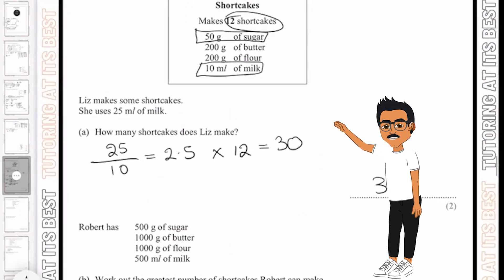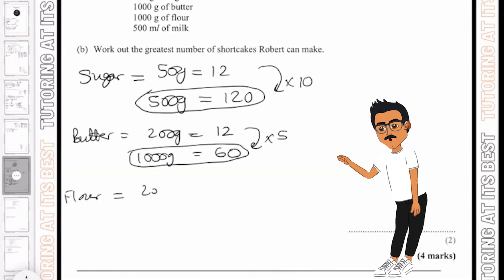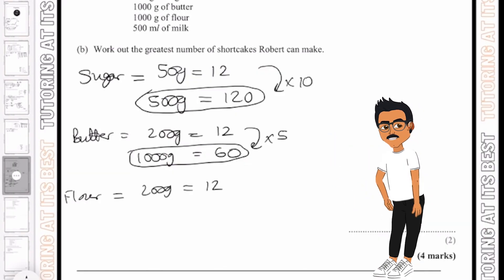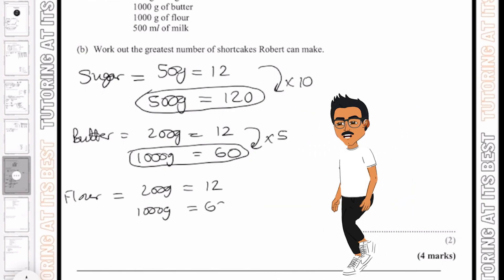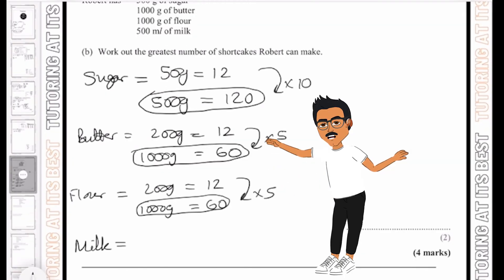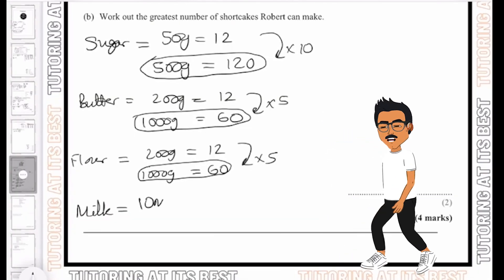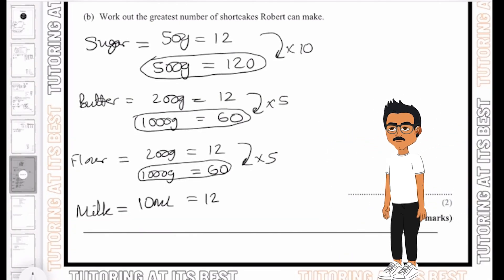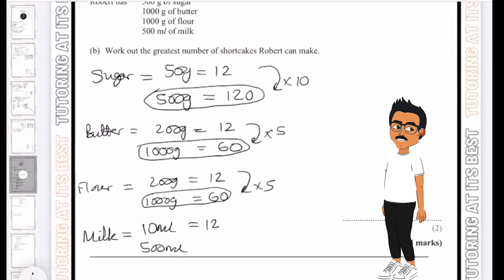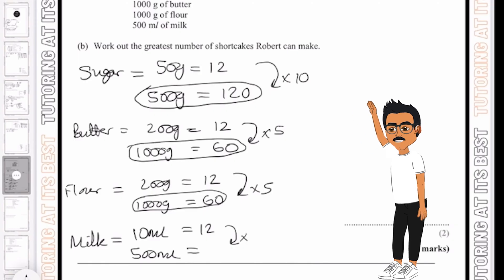And then over to our flour. Again, with our flour here, we have 200 grams of flour. So again, if we have 200 grams, which makes us 12 shortcakes, we need 1000, so we'll times it by 5 again, and we'll get 60. And then finally, we go to milk. And with milk, we have 10 milliliters of milk, and that would give us 12. But now with 10 milliliters, we need 500 milliliters. So with that 500 milliliters, we know that we need to multiply this by 50. So now we need to have 12, we need to multiply this by 50, which then would give us 600.